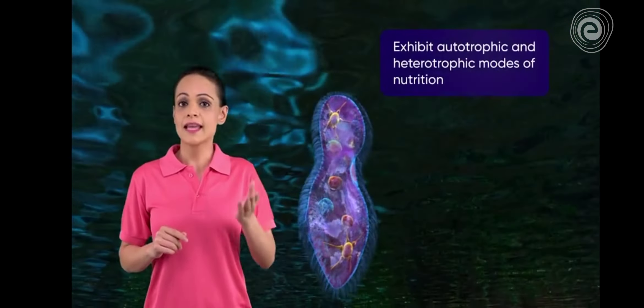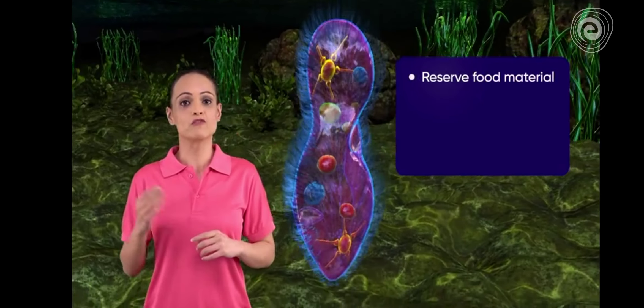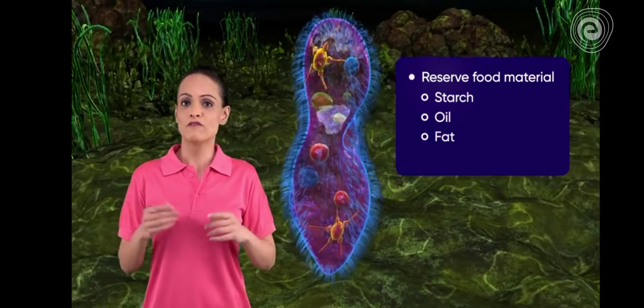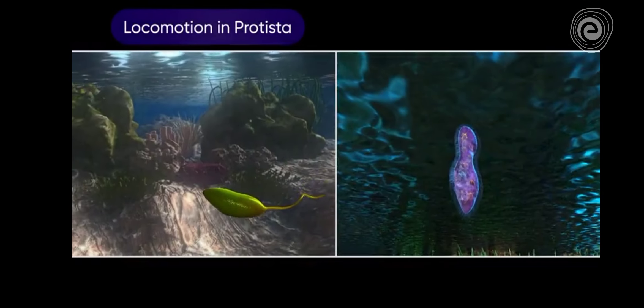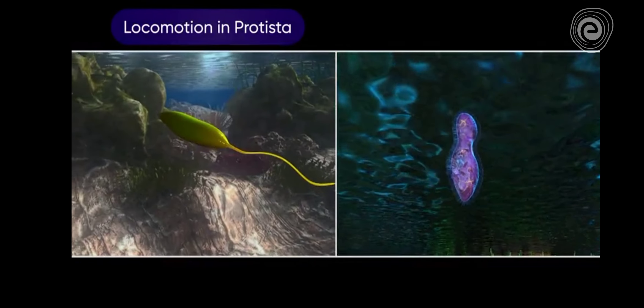They store reserved food material in the form of starch, oil, fat, or glycogen. Locomotion in Protista: for locomotion they have organelles like flagella and cilia.